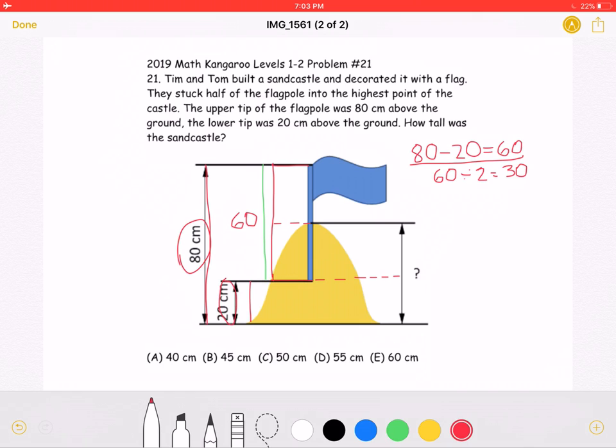The problem states that they stuck half of the flagpole into the highest point of the castle. That means that this portion of the flagpole is equal to this portion of the flagpole.